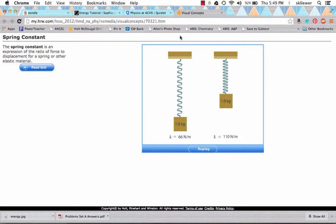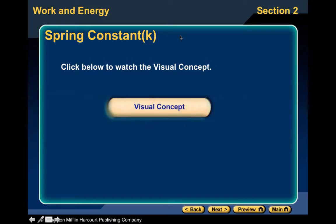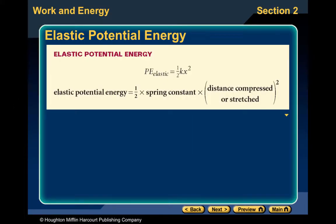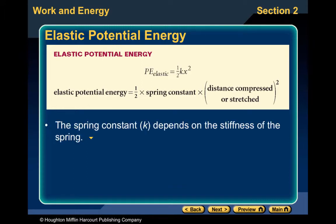Springs have different stiffnesses — we will study springs and periodic motion in more depth at the end of the year. This is a type of potential energy. Elastic potential energy, PE elastic, is equal to one-half k·x squared, where k is the spring constant and x is the distance compressed or stretched. The spring constant depends on the stiffness of the spring.